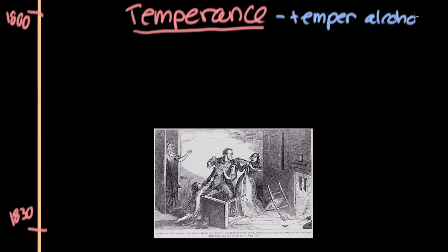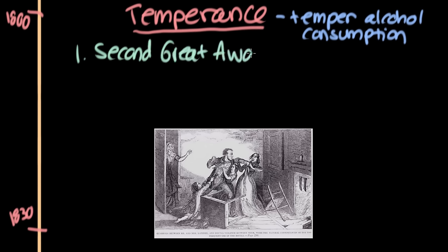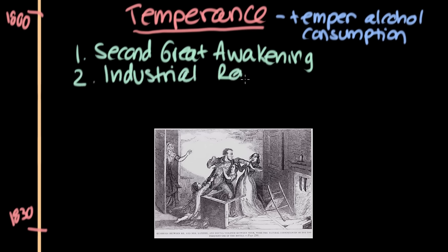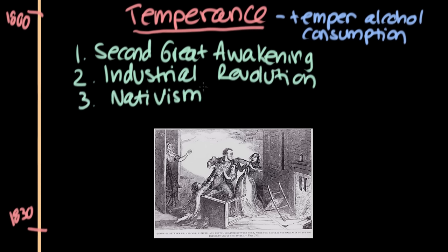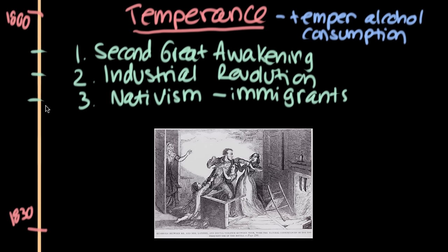So how did the temperance movement take root? The temperance movement has three main causes. The three main causes were the Second Great Awakening, the Industrial Revolution, and growing nativism and, frankly, racism that started as new immigrants were coming to America in the early 1800s. So this was all kind of happening right around here, and I'll talk a little bit more about each of these causes.